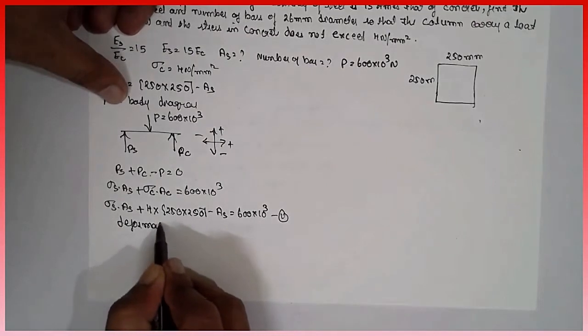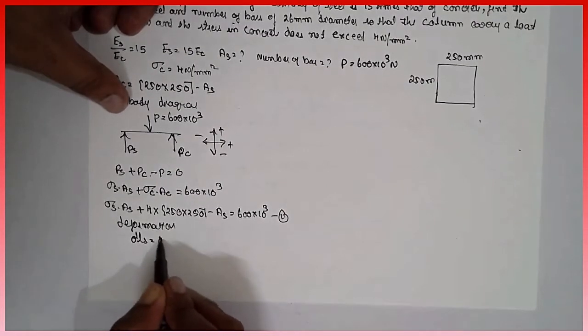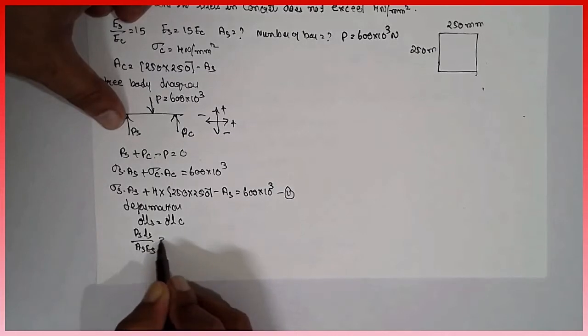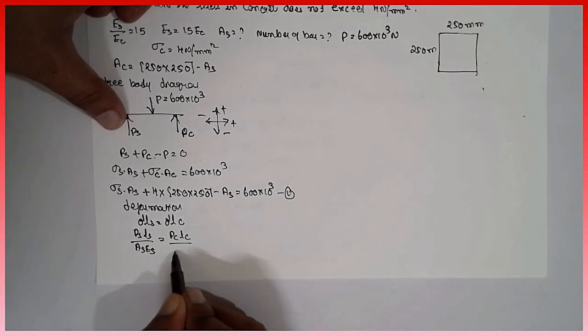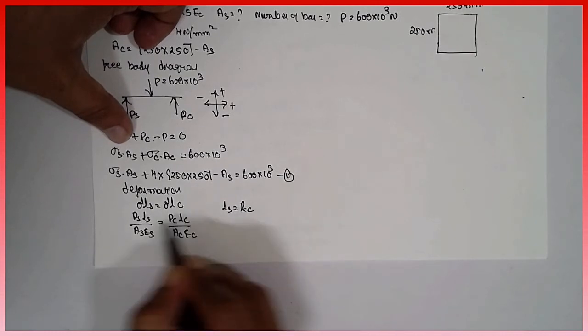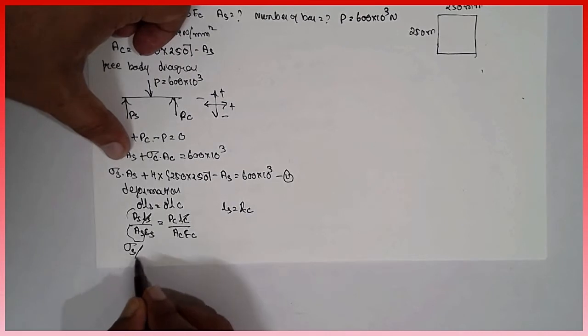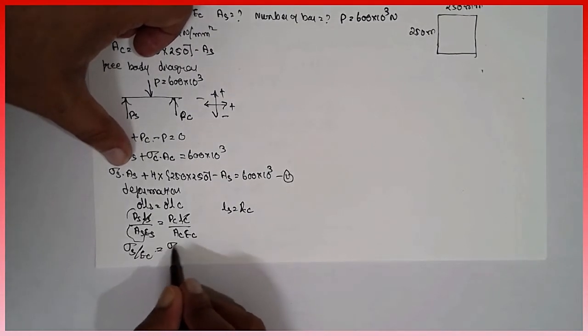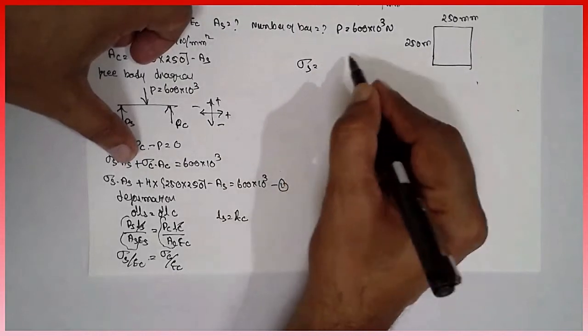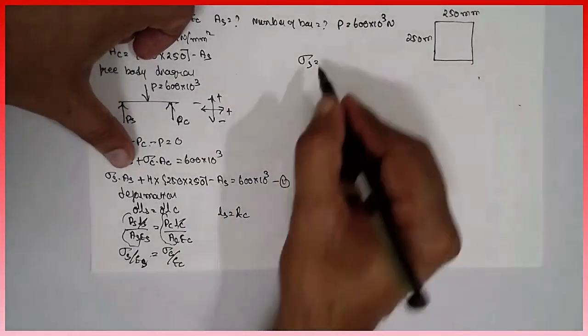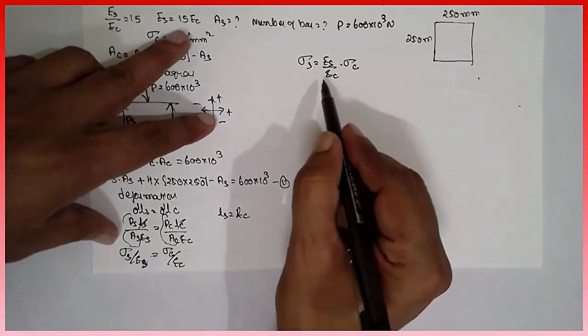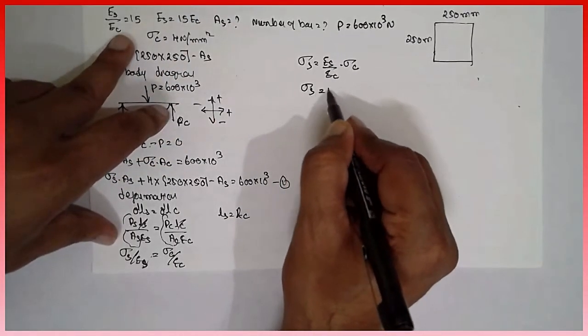Deformation, steel and concrete are equal. Delta Ls is equal to delta Lc. Formula is Ps Ls divided by As Es is equal to Pc Lc divided by Ac Ec. Sigma s divided by Es is equal to sigma c divided by Ec. Now sigma s is Es divided by Ec into sigma c. Es by Ec is nothing but modulus is nothing but 15. Sigma s is equal to 15 sigma c.